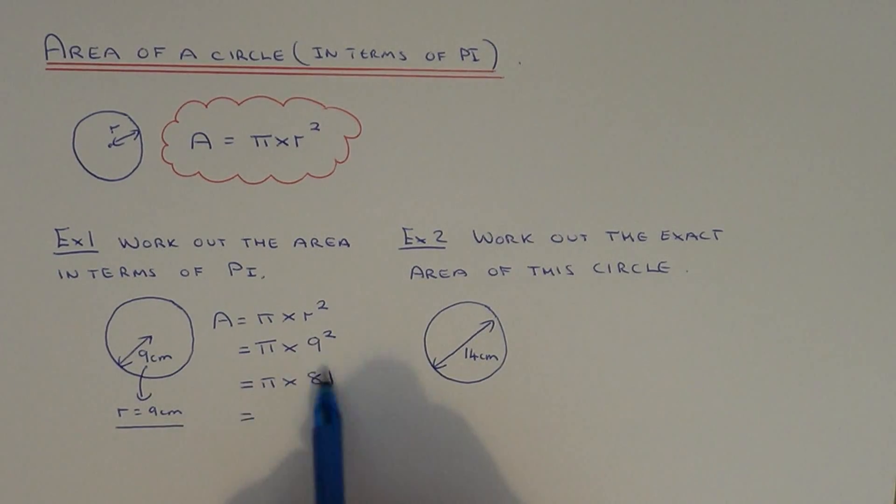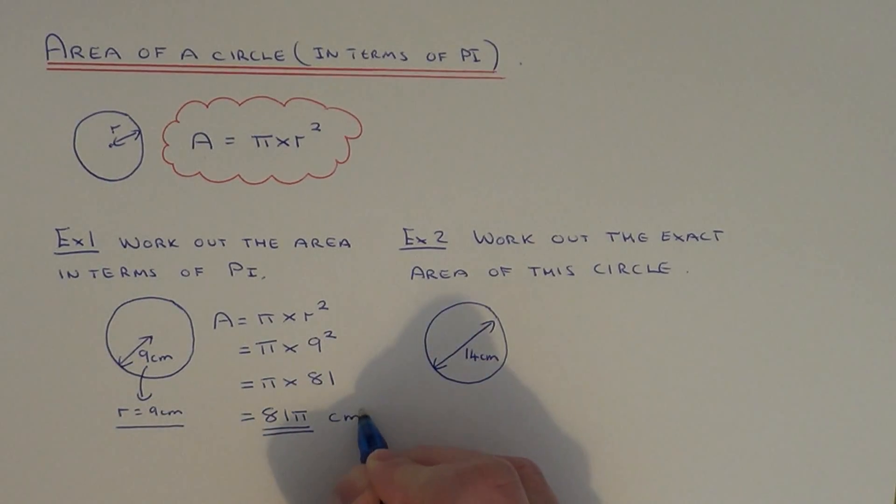We're not going to work this out on your calculator. We're going to leave it as an exact answer in terms of pi. So if you put 81 first followed by pi, that would be the area of the circle. So it's 81 pi centimeters squared.